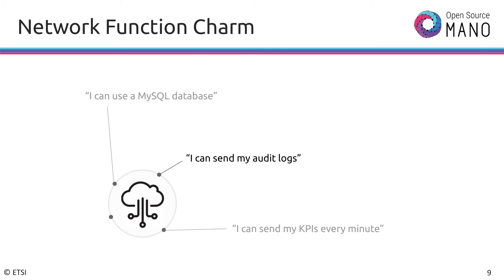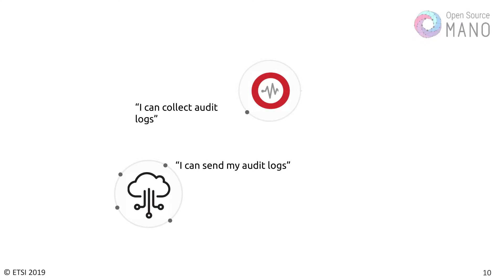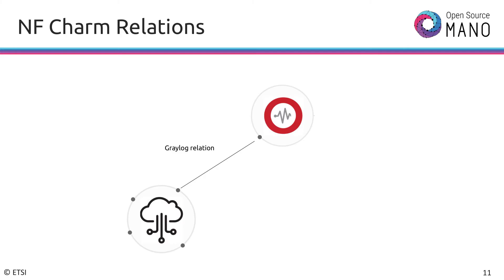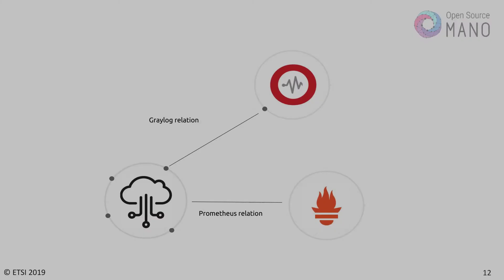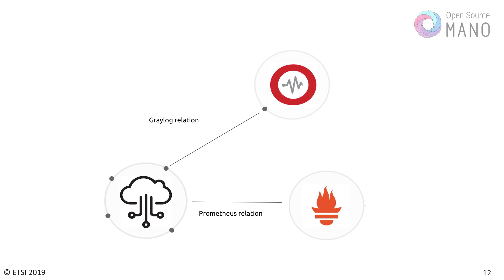There can also be another charm — in this example, Graylog — which collects audit logs. These two charms finding themselves together can form a relation. Having such a Graylog relation means that without any additional hassle, the network function will start sending audit logs to Graylog. The same goes for other relations like Prometheus or databases or any other tools you might need as additional capabilities for the network function.